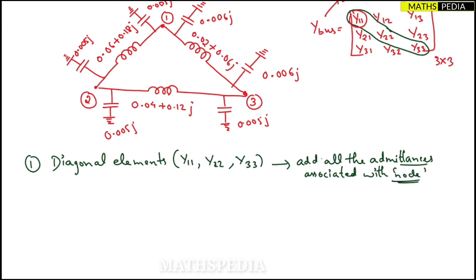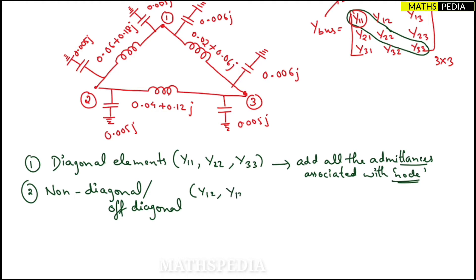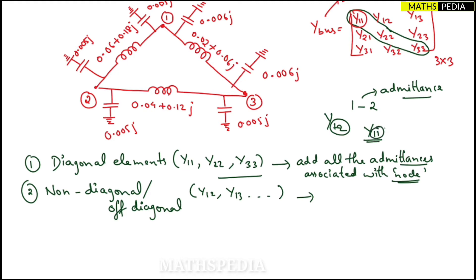For non-diagonal or off-diagonal elements such as Y12, Y13, you look only at the admittance directly between those two nodes. For diagonal elements, also remember: half-line charging admittance is added to diagonal elements only, not to off-diagonal elements.